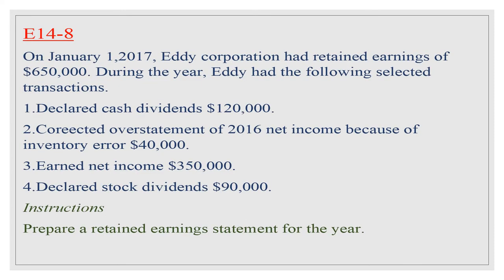Next, we discuss the statement of retained earnings. On January 1, E Corporation had retained earnings of $650,000. During the year it had the following transactions: (1) declared cash dividends of $120,000; (2) corrected an overstatement of 2016 net income due to an inventory error of $40,000; (3) earned net income of $350,000; (4) declared a stock dividend of $90,000. Instructions: Prepare a retained earnings statement for the year.